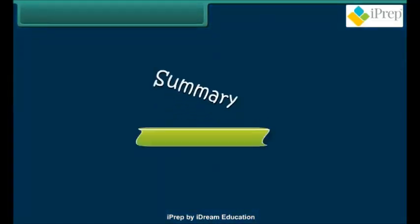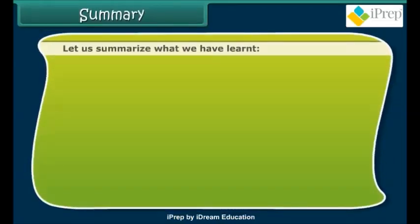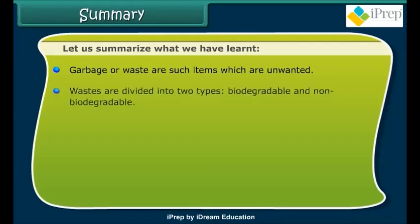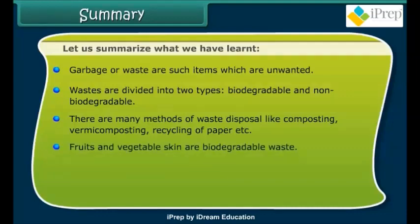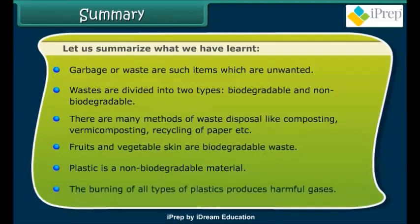Let us summarize what we have learned. Garbage or waste consists of items which are unwanted. Wastes are divided into two types: biodegradable and non-biodegradable. There are many methods of waste disposal like composting, vermicomposting, and recycling of paper. Fruits and vegetable skins are biodegradable waste. Plastic is a non-biodegradable material. The burning of all types of plastics produces harmful gases.